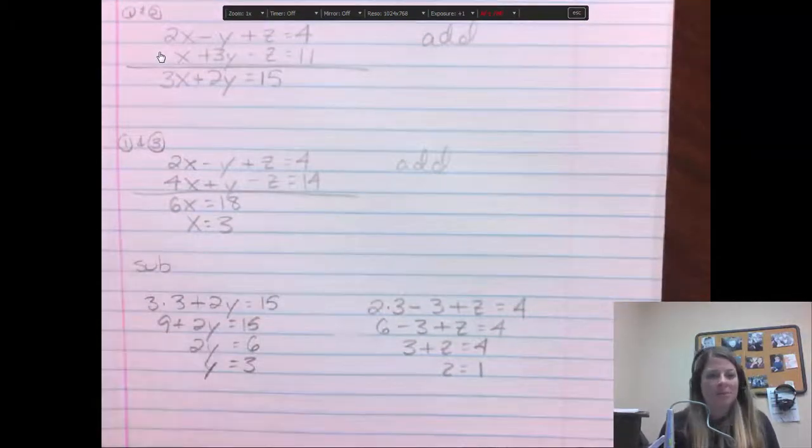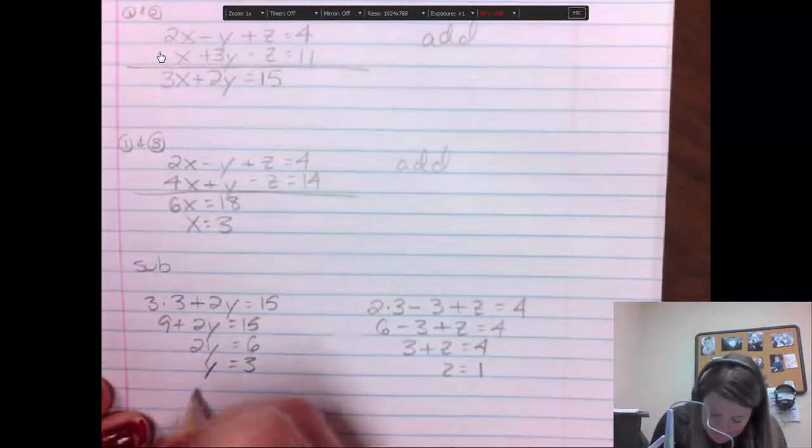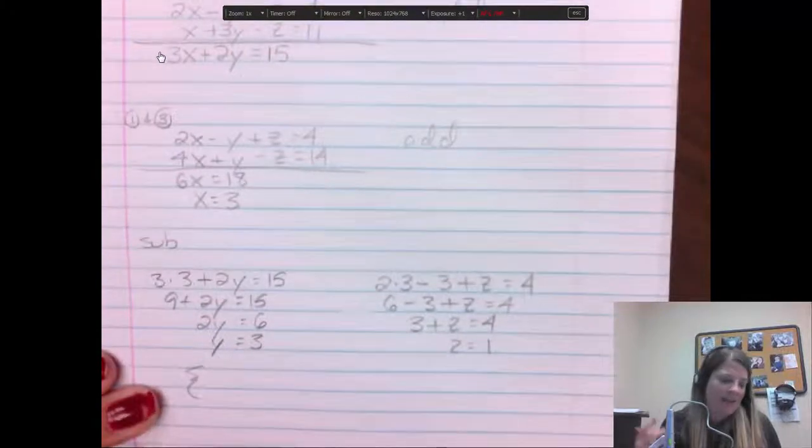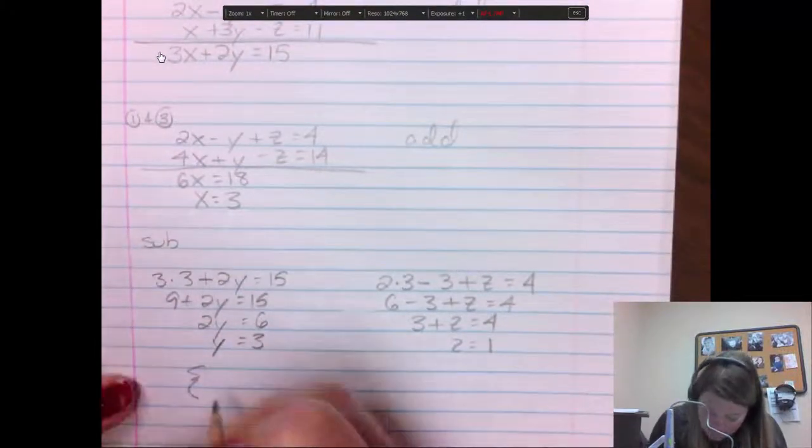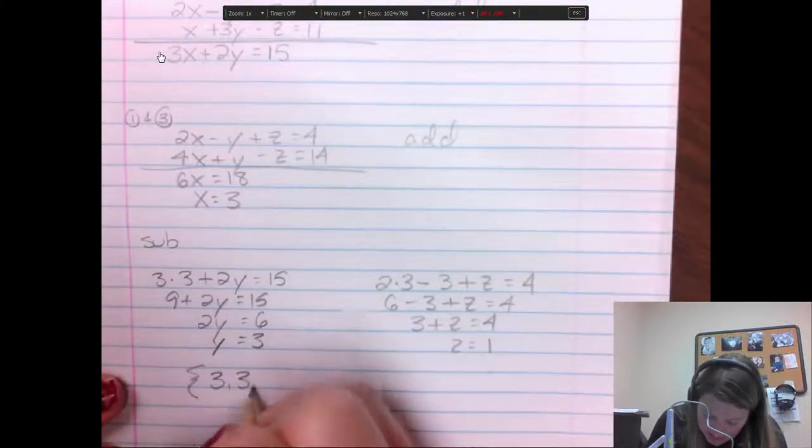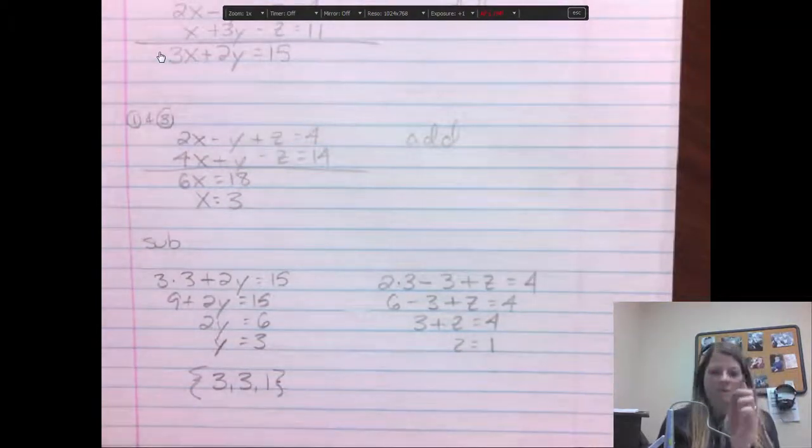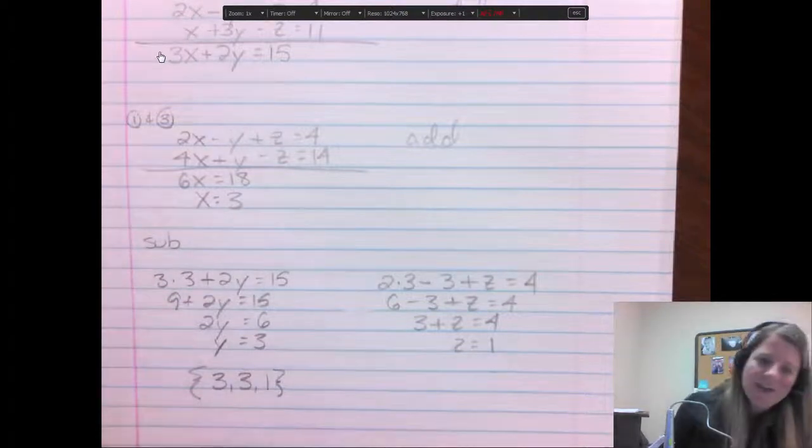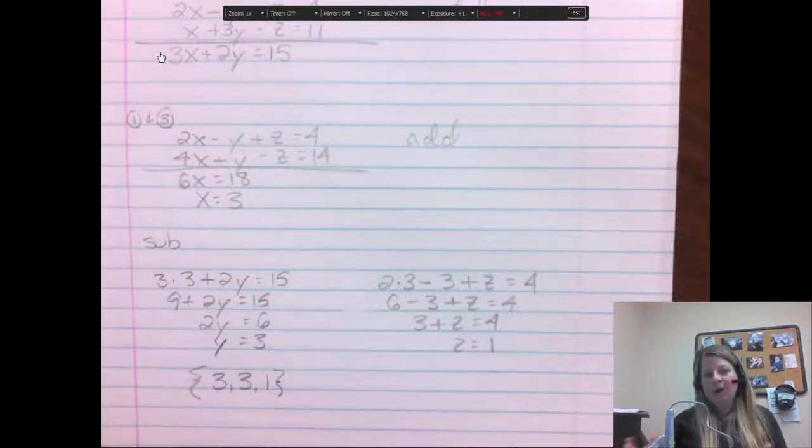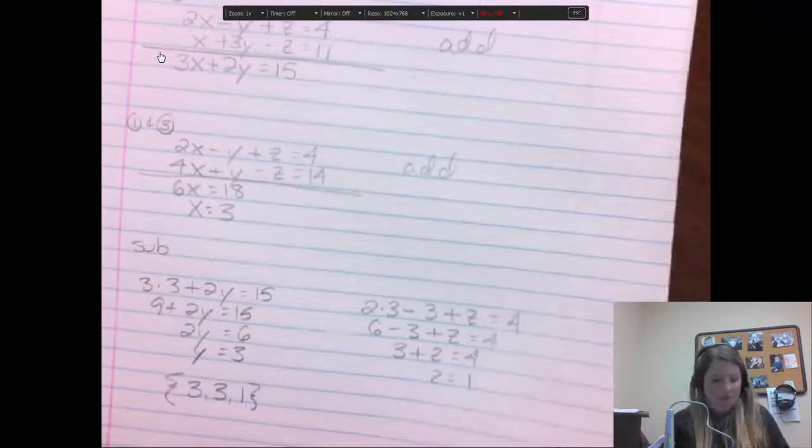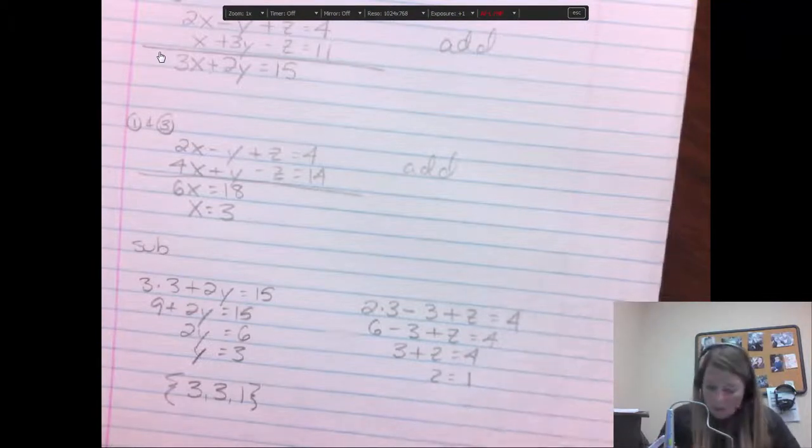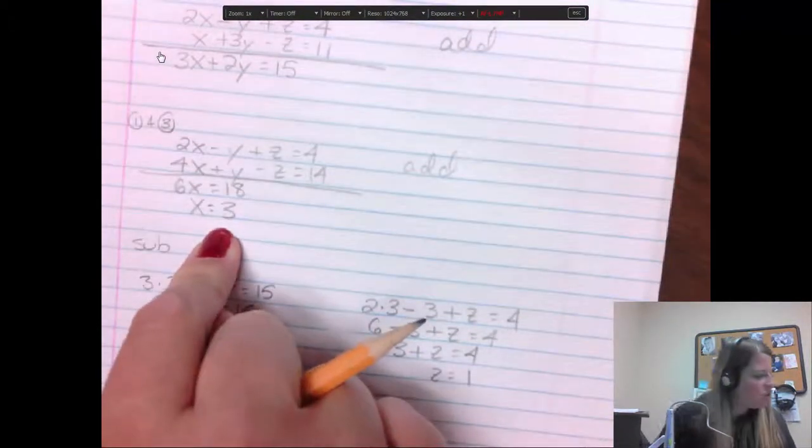So 2 times 3 is 6. Minus 3 plus z equals 4. 6 minus 3 is 3 plus z equals 4. Subtract that 3 over to the 4 and I get z is 1. So my answer is x, y, z. And if you have to put those in MyMathLab, typically it'll give like a set bracket saying it's a set of answers. And it'll go x, y, z with commas in between. Sometimes it'll say x, you put in the answer, then z, then y. It kind of depends on if it's a word problem or how they're asking for that answer.